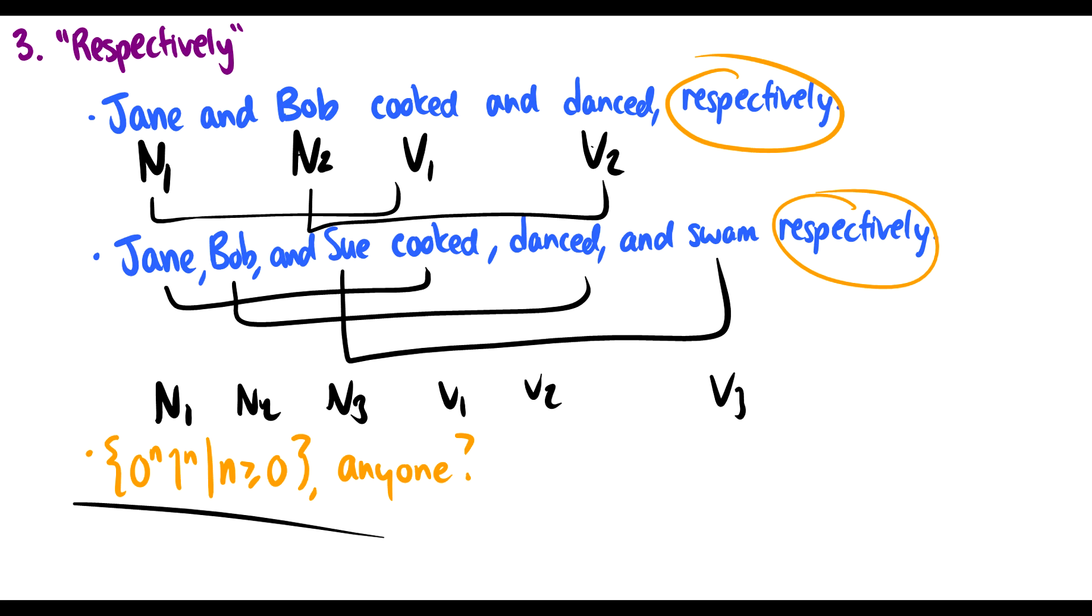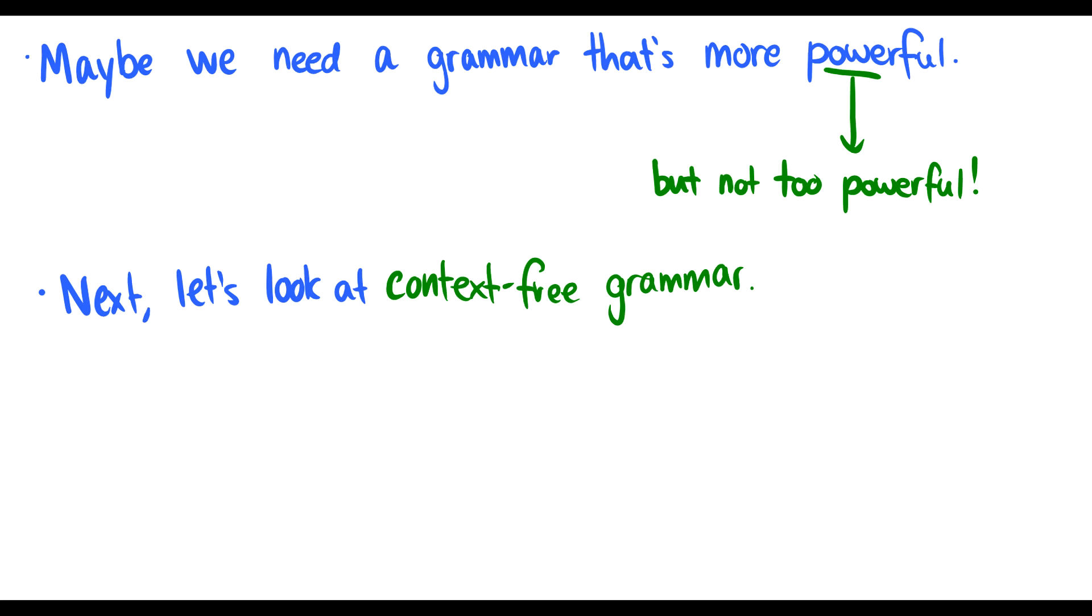Two linguistic, one more psychology. What do we do? Maybe we need some grammar system that's a little bit more powerful. We don't want a system that can produce everything. We want something that's pretty close to what works in the brain, a nice way to model language. We're going to take a look at context-free grammar next.